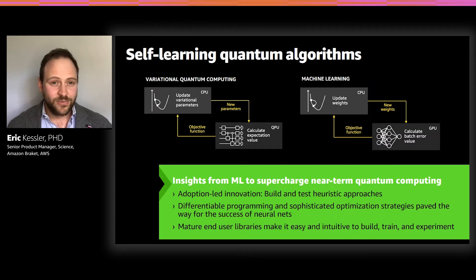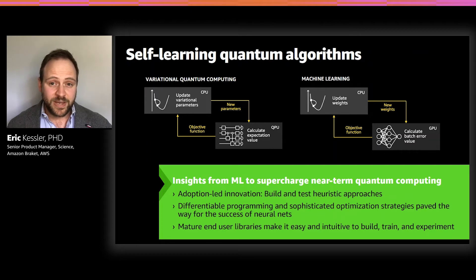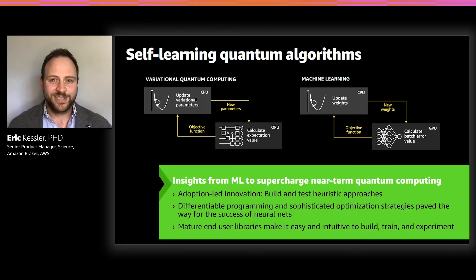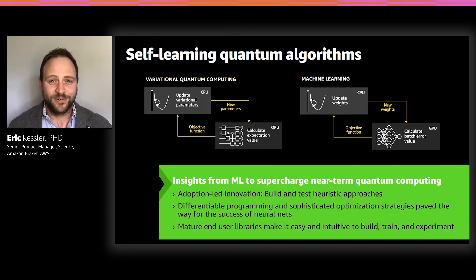And this analogy doesn't stop there — it actually runs deeper between these two fields. In my opinion, quantum computing can learn a lot from the insights and research in the ML community over the past years. Similar to the past decade or two in machine learning, I believe we will see an increase of what I call adoption-led innovation. Because in this variational paradigm, both on the quantum computing and on the machine learning side, it is extremely hard to prove any type of hard speed-up purely theoretically or a priori. And in many cases, the best approach is just to build it and find out — that's what has happened in the machine learning community for many years now.